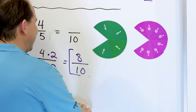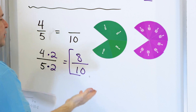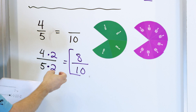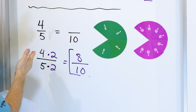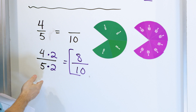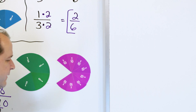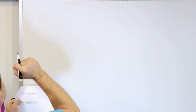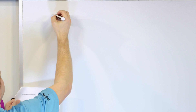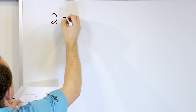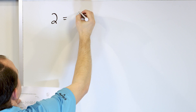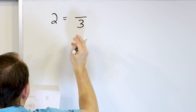Now, again, on a test you're not going to have magnets to do this, so you can't use tools to help you. We have to know how to do it with math — multiply the top and bottom by 2 in this example to get us to the final answer. All right, let's take a look at the next problem. Let's mix it up a little bit. Let's say we have the number 2 equals something over 3.